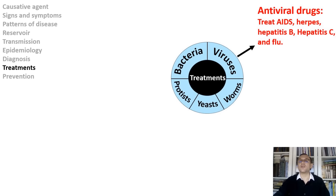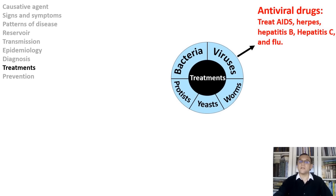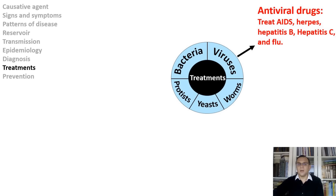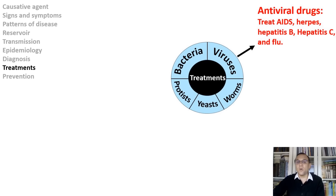If you get sick with the flu, antiviral drugs are a treatment option — check with your doctor promptly, especially if you are at higher risk of serious flu complications. So far, only hepatitis C can be cured with antiviral drugs. This is because viruses replicate within the host cell using the genetic and metabolic mechanisms of the host's own cells, making it hard to target the virus without damaging the host cell machinery. However, as more becomes known about viral replication, more targets should suggest themselves for antiviral action.